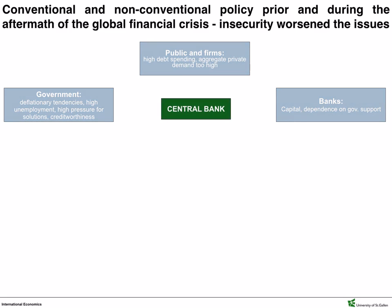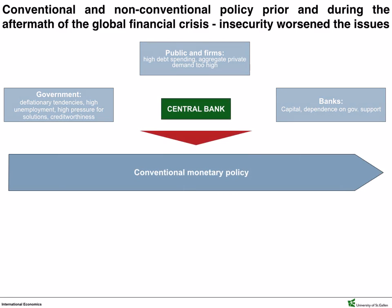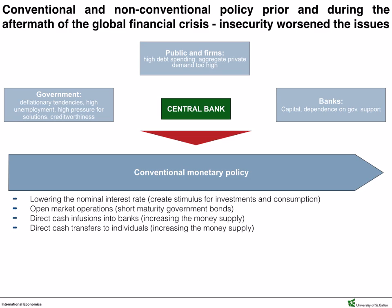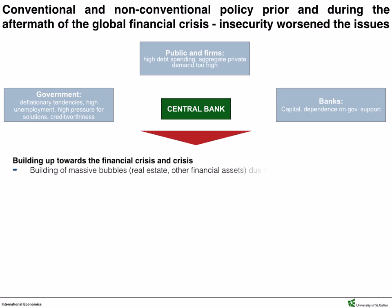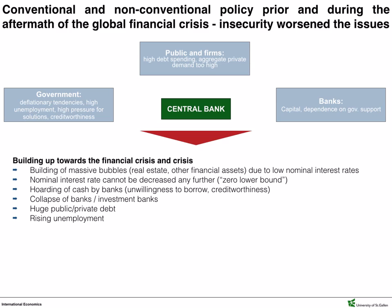The role of the central bank becomes increasingly important. The most prominent conventional policy is lowering the nominal short-term interest rates, creating stimulus for investments and consumption. Even more so, the central banks might consider open market operations, like buying or selling majority government bonds, direct cash infusions to banks and so on, all increasing the money supply. The financial crisis begins to unwind, exposing massive real estate bubbles due to the low nominal interest rate, which could not be decreased any further below the zero lower bound. Due to trust issues and shocks from CDO sales, many banks proceeded hoarding cash, while others simply collapsed, resulting in massive bailout programs from governments.